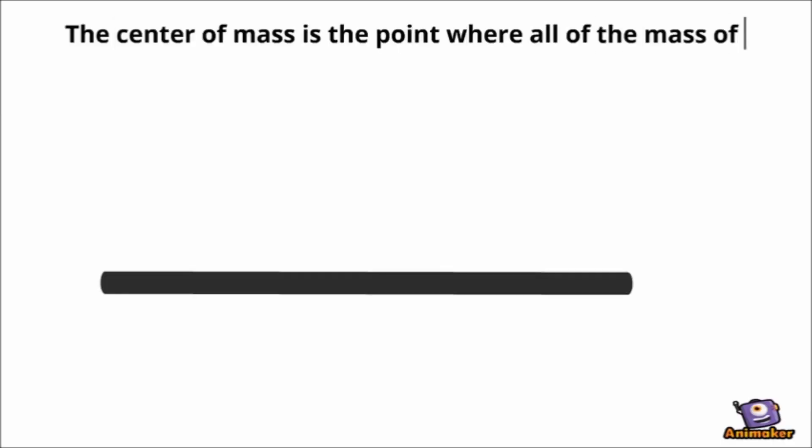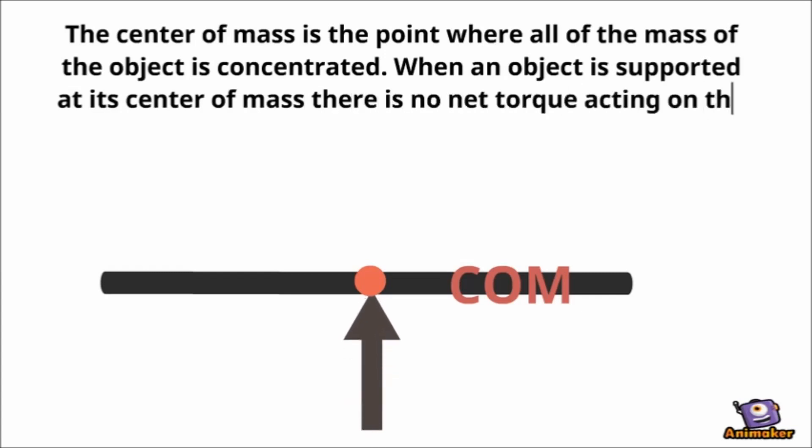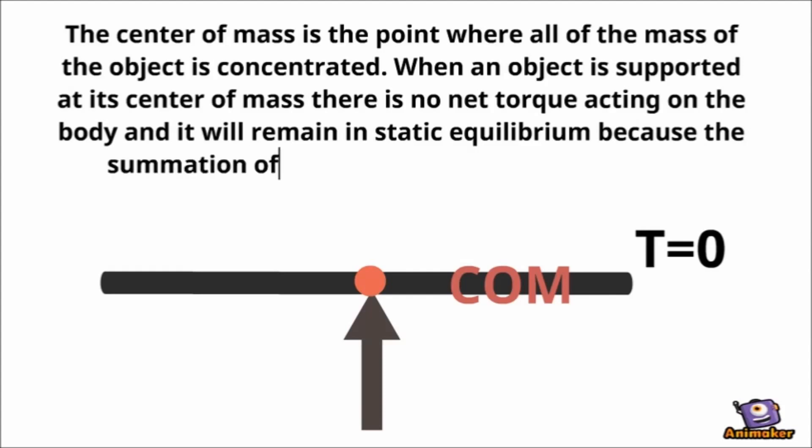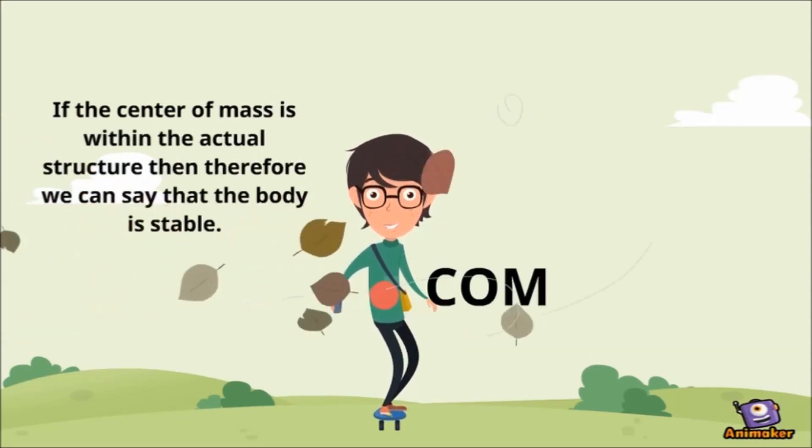Center of mass. The center of mass is the point where all of the mass of the object is concentrated. When an object is supported at its center of mass, there is no net torque acting on the body and it will remain in static equilibrium because the summation of torque will produce a zero value. If the center of mass is within the actual structure then therefore we can say that the body is stable.